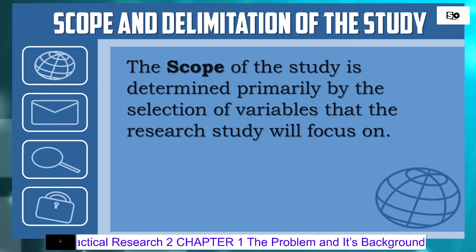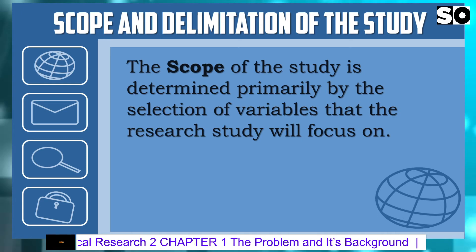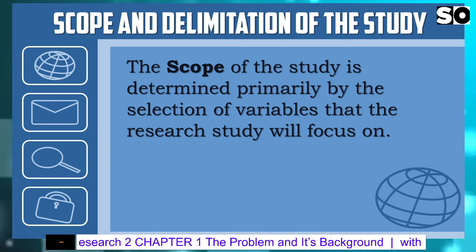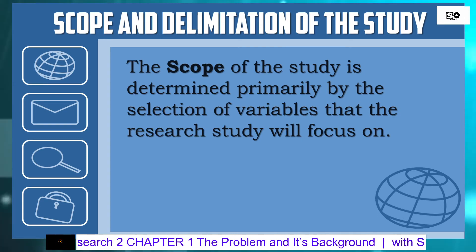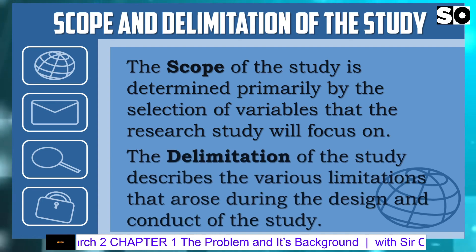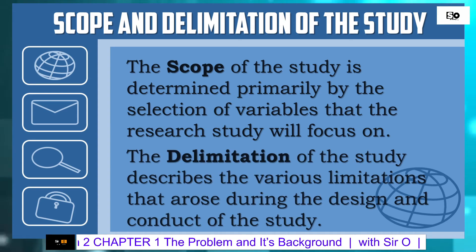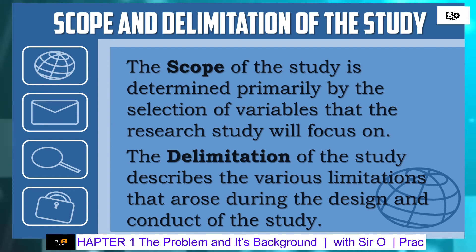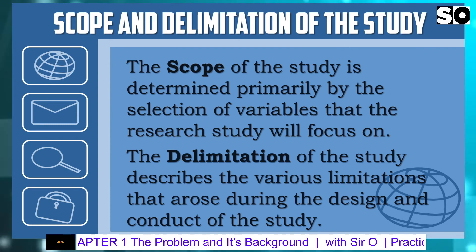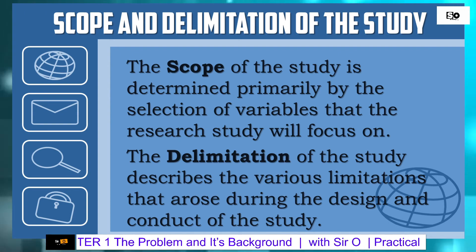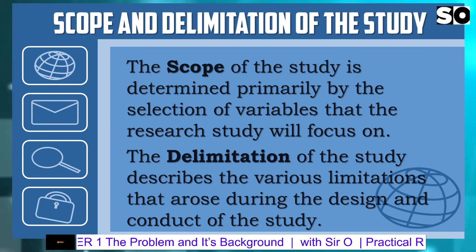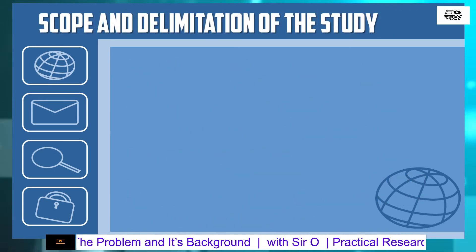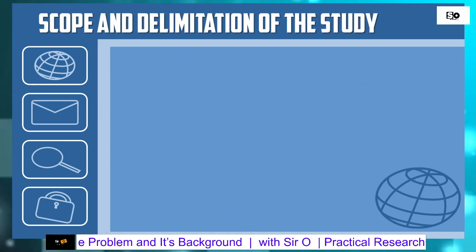The scope of the study is determined primarily by the selection of variables that the research study will focus on, while the delimitation of the study describes the various limitations that arose during the design and conduct of the study. Here is an example of the scope and delimitation of the study.